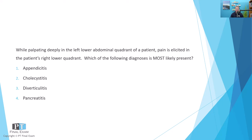Here we go. While palpating deeply in the left lower abdominal quadrant of a patient, pain is elicited in the patient's right lower quadrant. Which of the following diagnoses is most likely present? Option 1: Appendicitis. Option 2: Cholecystitis. Option 3: Diverticulitis. Option 4: Pancreatitis. The pain is elicited in the right lower quadrant with palpation in the left lower quadrant — which diagnosis is most likely?